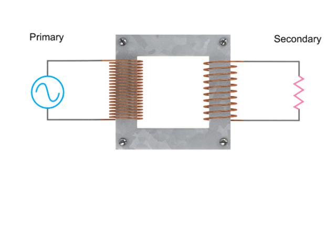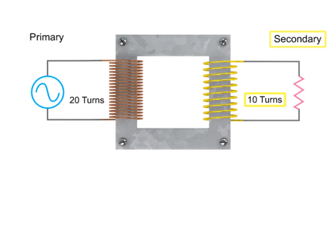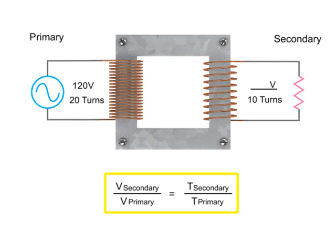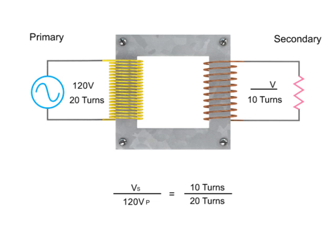In this example, we have 20 turns on the primary coil and 10 turns on the secondary coil. To determine the decrease in voltage occurring in this step down transformer, we can use a simple ratio formula. This formula simply states that the secondary voltage to primary voltage ratio is the same as the secondary coil to primary coil turn ratio.